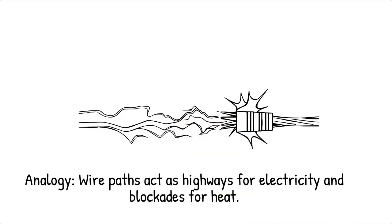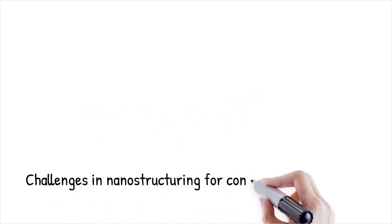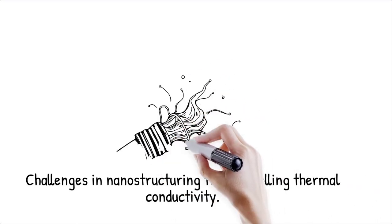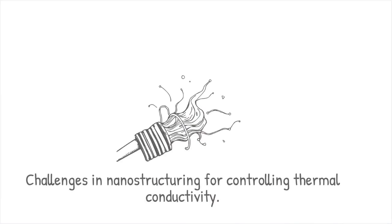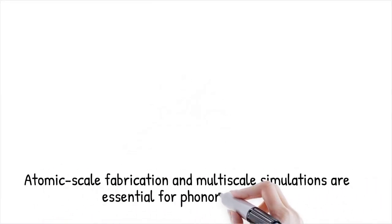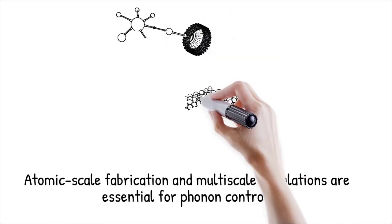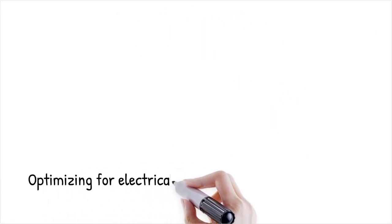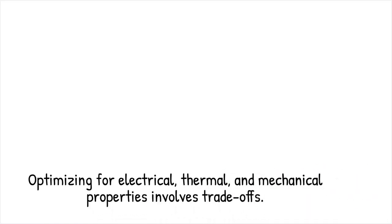Nanostructured bismuth telluride, Bi2Te3, shows enhanced thermoelectric efficiency due to strong phonon scattering from nanoscale inclusions while maintaining good electrical performance. It's like insulating a wire in such a way that electricity flows perfectly, but heat can barely trickle through—turning the same path into both a highway and a blockade, depending on what travels on it.